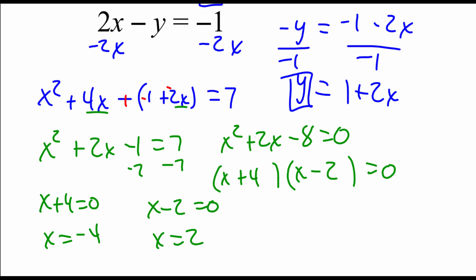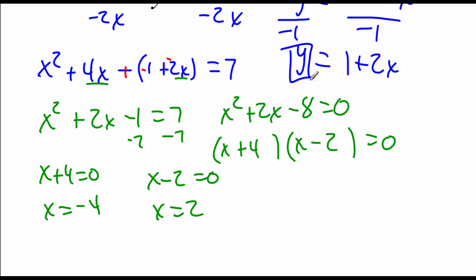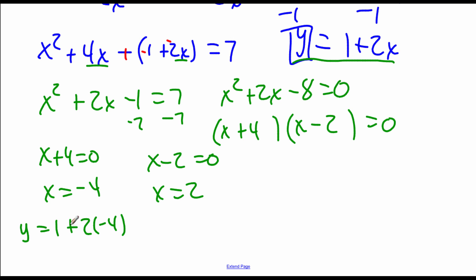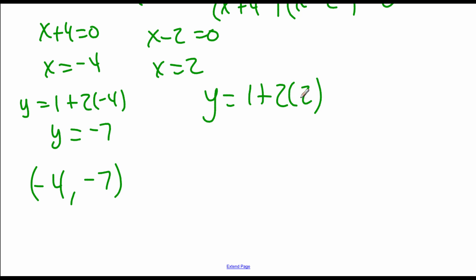Since we have two x values, we need to plug them both in to get two y values, using y equals 1 plus 2x. For x equals negative 4: y equals 1 plus 2 times negative 4, which is 1 plus negative 8, so y equals negative 7. That gives the ordered pair (negative 4, negative 7). For x equals 2: y equals 1 plus 2 times 2, which is 1 plus 4, so y equals 5. That gives the ordered pair (2, 5).